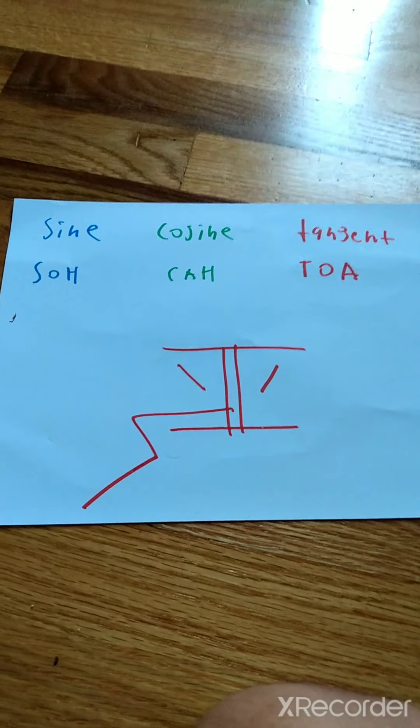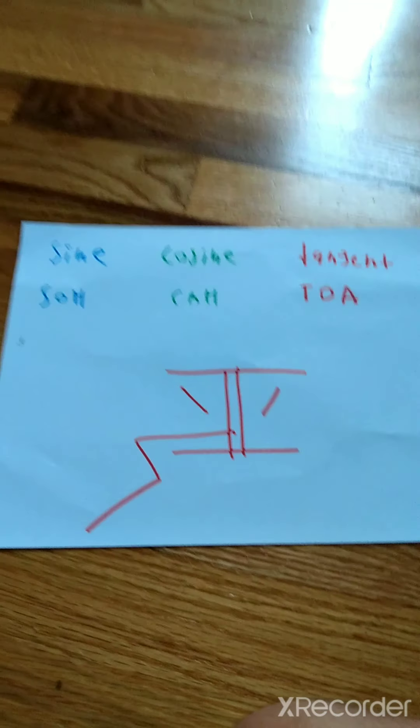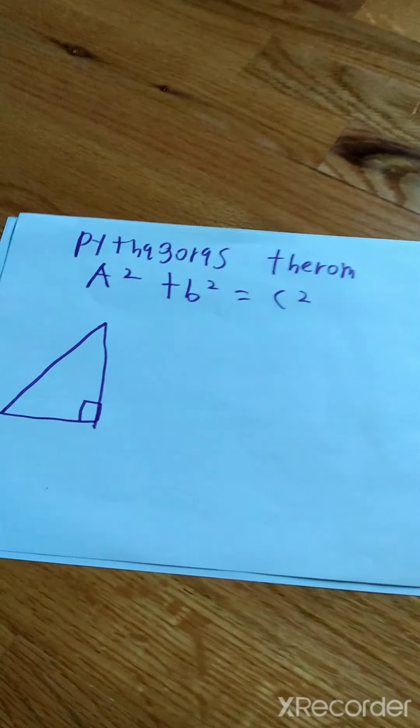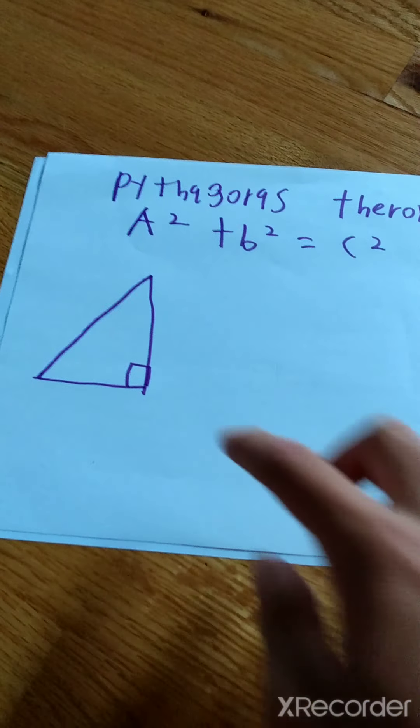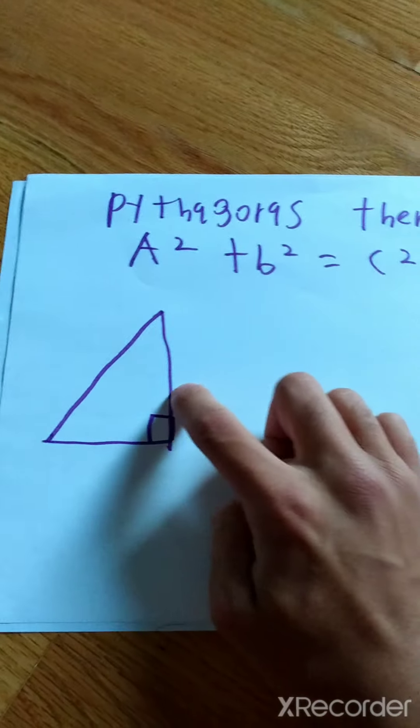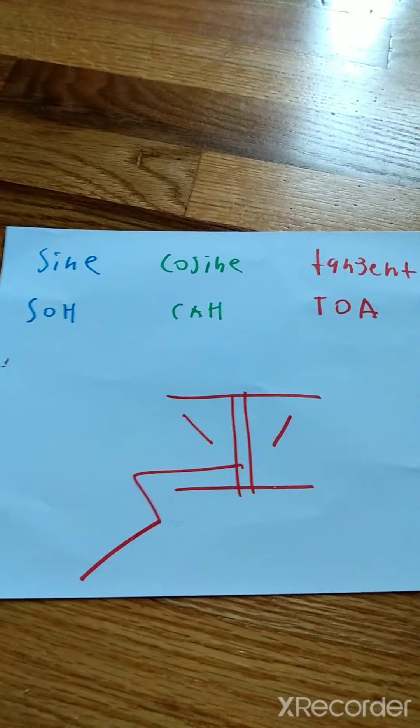But before we start learning about sine, cosine, and tangent, we gotta understand the Pythagorean Theorem first, because Pythagorean Theorem only works with right triangles, and sine, cosine, and tangent will usually work with a right triangle.